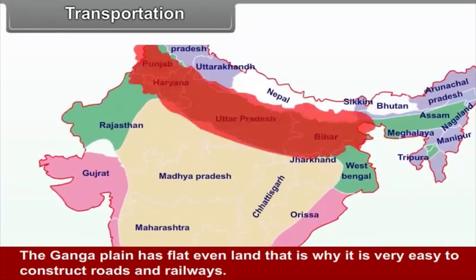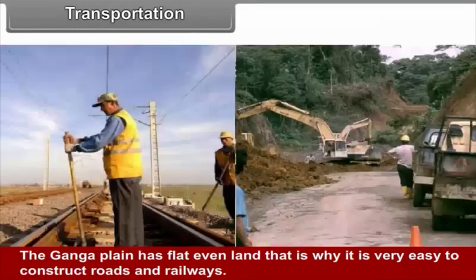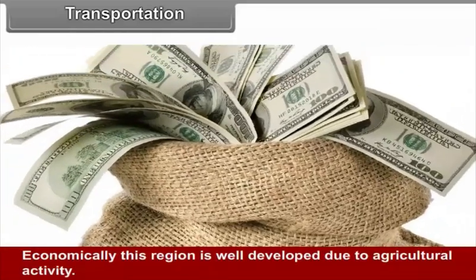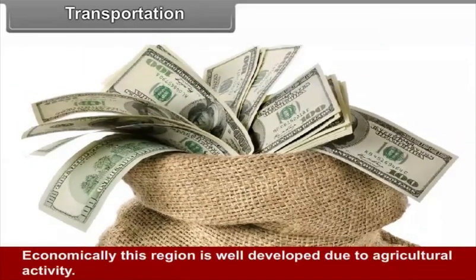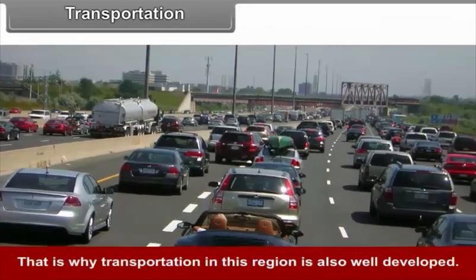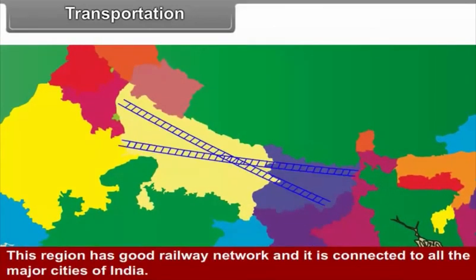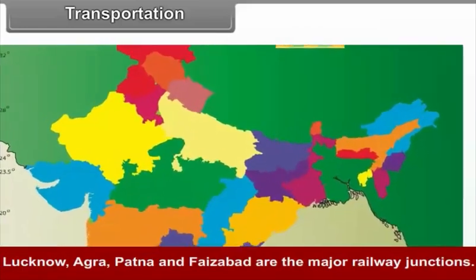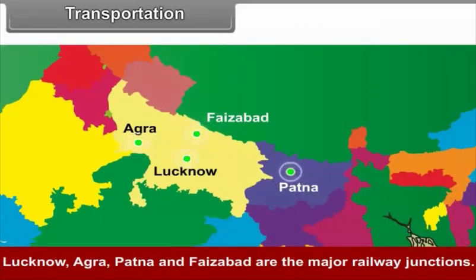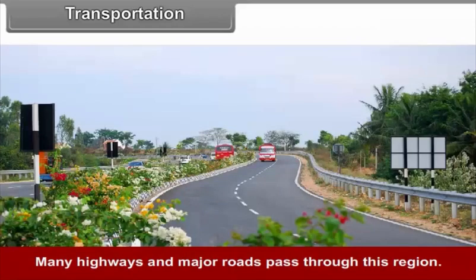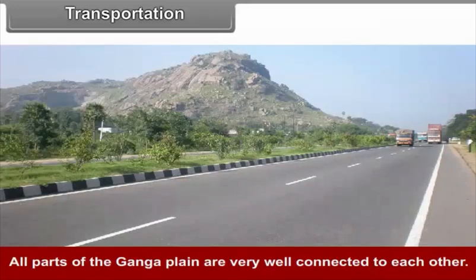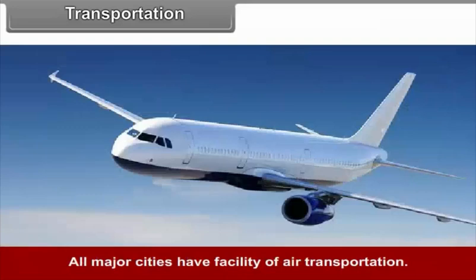Transportation. The Ganga plain has flat, even land, making it very easy to construct roads and railways. Economically, this region is well developed due to agricultural activity, and transportation is also well developed. This region has a good railway network connected to all the major cities of India. Lucknow, Agra, Patna and Faizabad are the major railway junctions. Many highways and major roads pass through this region. All parts of the Ganga plain are very well connected to each other. All major cities have the facility of air transportation.